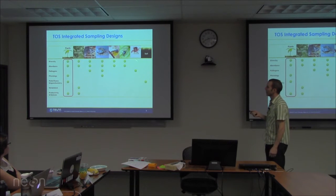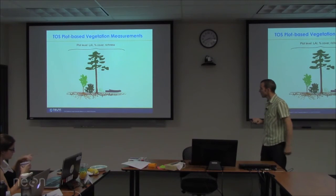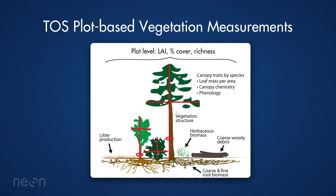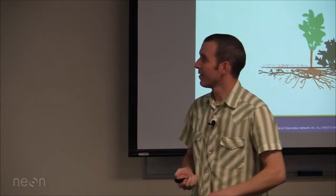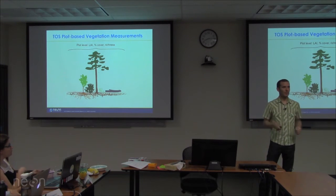I'm going to focus on the plants, as those mostly integrate with remote sensing datasets. At the plot level, we'll be measuring LAI, percent cover, and richness. LAI is measured with a hemispherical photo approach — upward and downward facing hemispherical photos to understand canopy and understory contributions to leaf area index. The ground data from those cameras is at coarser spatial resolution than the airborne instruments, giving roughly a 40 by 40 meter number rather than 1 to 1.5 meter pixels.